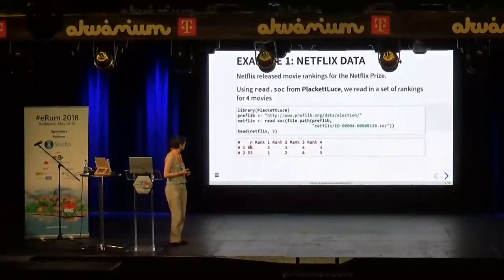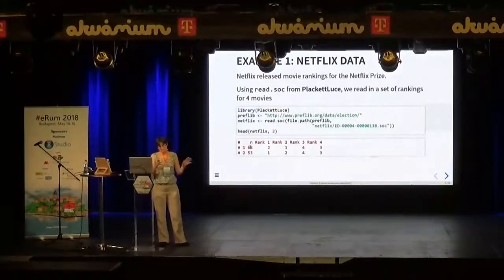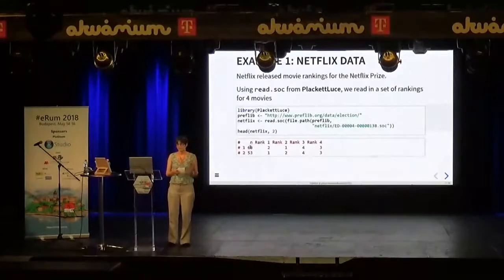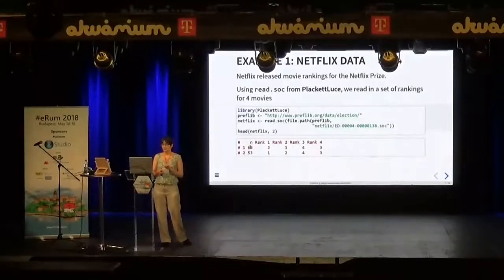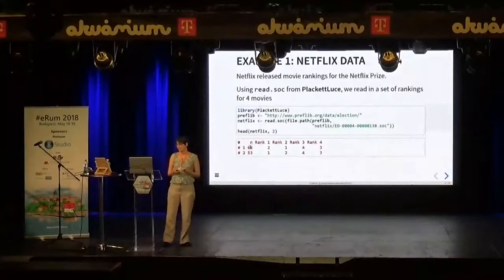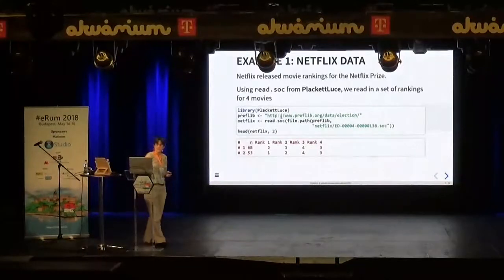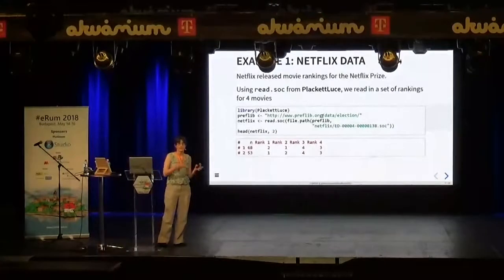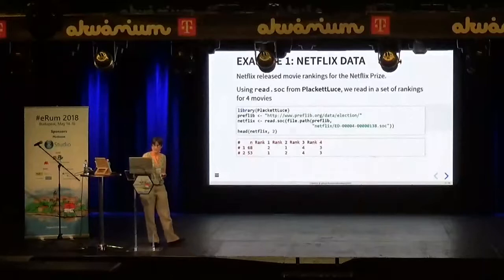Here's an example using data released by Netflix for the Netflix Prize. They released lots of movie rankings in a competition, and we're just going to look at a small subset of rankings of four movies. There's a little helper function in the PlackettLuce package called read.soc, which reads rankings from a file in a particular format used on Preflib — a library of preference data with various standard datasets that the community have shared for modelling and so on. We can read in this data using read.soc directly offline, and the result is as shown at the bottom here.